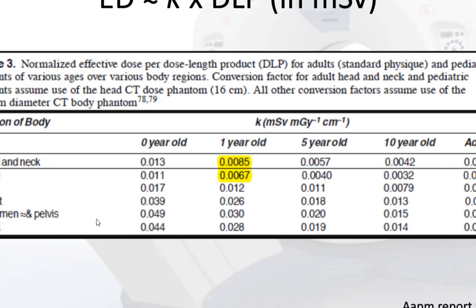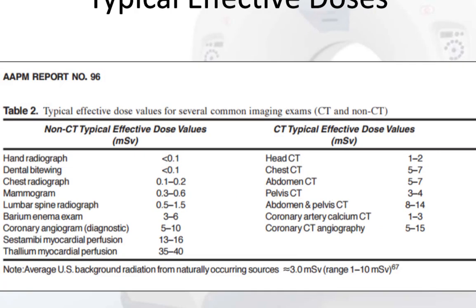For abdomen and pelvis, the K coefficient is always a constant 0.015 for any abdomen and pelvis CT scan. For the chest, it will always be 0.014. These are constants — they do not change patient to patient or scanner to scanner.